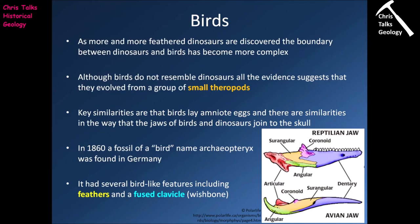Key similarities between birds and dinosaurs are that birds lay amniote eggs, just like dinosaurs, and there are similarities in the way that the jaws of birds and dinosaurs join to the skull. We can see a sketch diagram of a reptilian jaw and a generalized avian jaw — the bones are different sizes, but the same bones are present in both jaws, which is a strong indicator that these animals may well be related to each other.